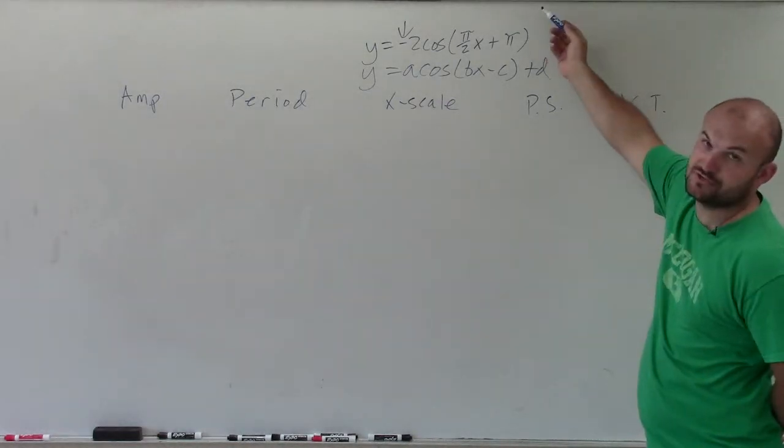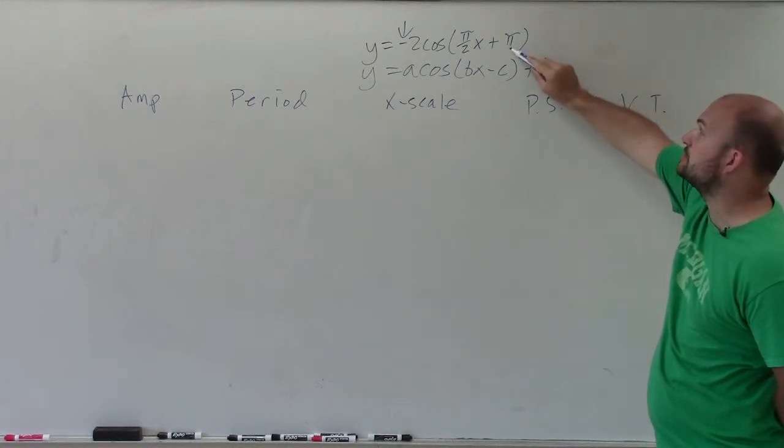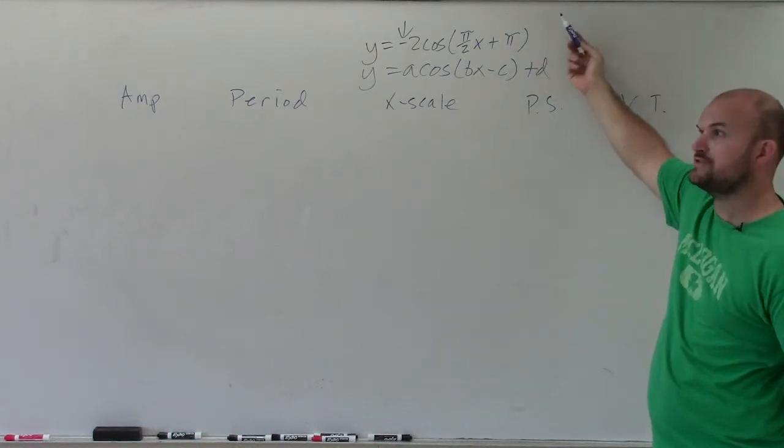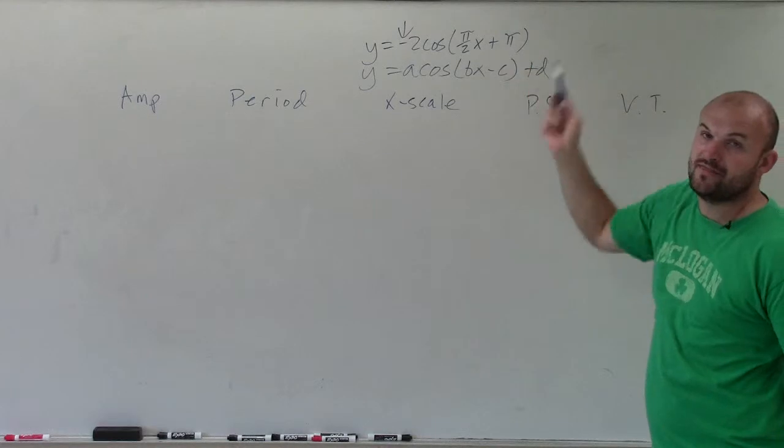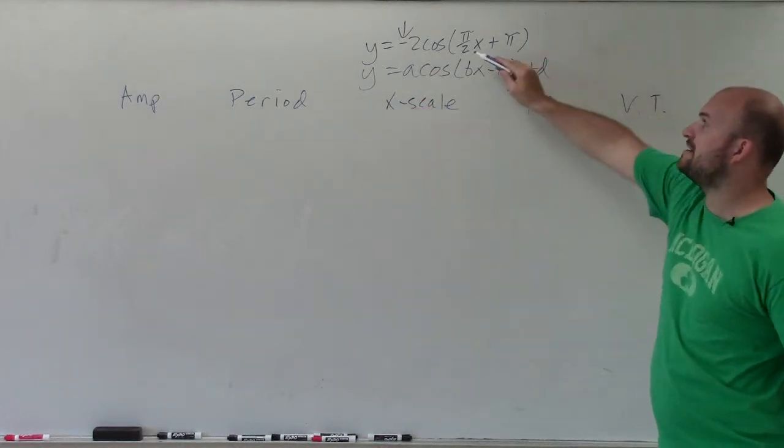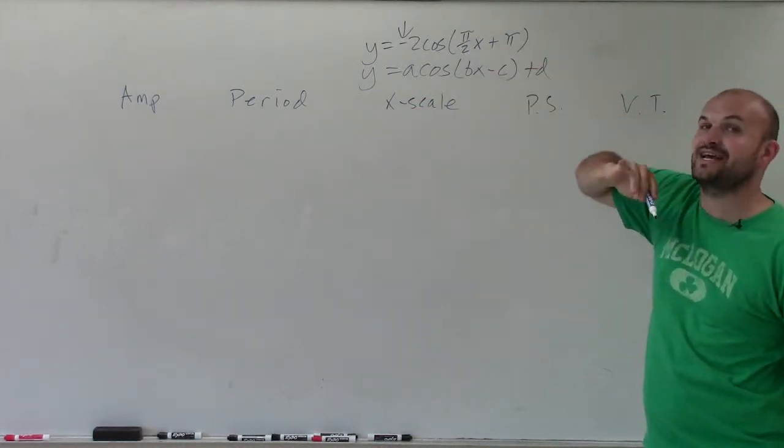One kind of common trick that I'll see students will at least make is they say, oh, it's going to be shifted pi to the right. Well, first of all, it's opposite, right? And then they say, OK, well, that's pi to the left. Well, no, you've got to make sure we're changing our period. So that's going to change everything. And I'll show you again how that affects it.